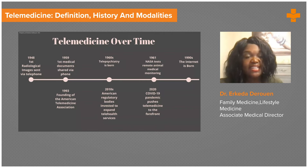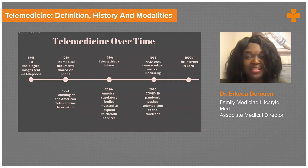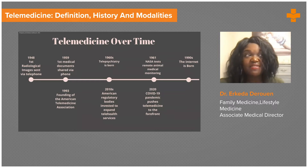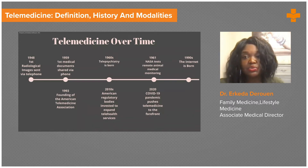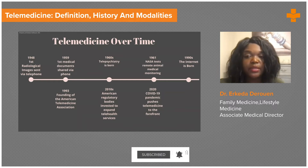In 1948, the first radiological images were sent via telephone — transmitted across 24 miles, or 38.6 kilometers, in the state of Pennsylvania in the US, thought to be of a hand. In 1959, the first medical documents were sent via telephone. The University of Nebraska used telemedicine to transmit neurological examinations, which was the first case of health professionals using the telephone to send and receive medical documents across long distances.